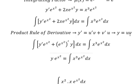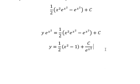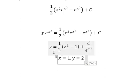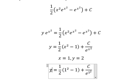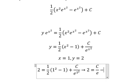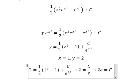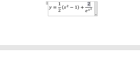Now we have the initial conditions. We put x equals 1 and y equals 2 to find the value of C. After simplifying, we have 2 equals C over e. So we have C equals 2e.